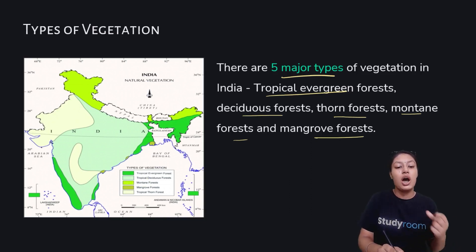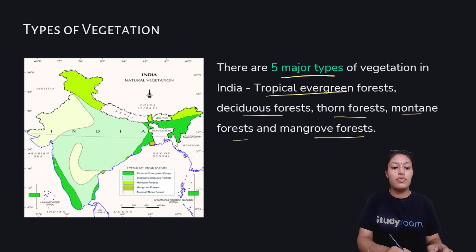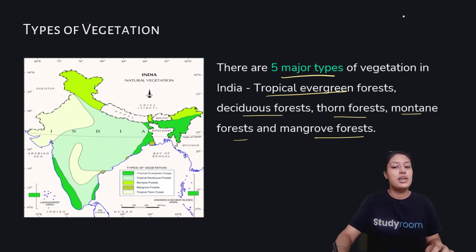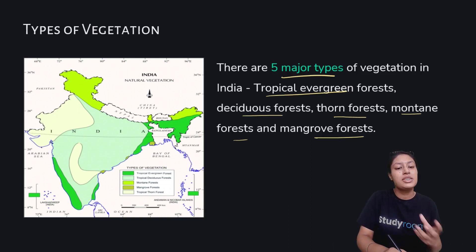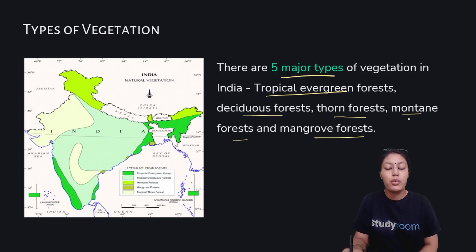Looking at the map, let's understand what type of forest and where they are located. Tropical evergreen forests are found on the western coast and somewhere on the eastern sides of our country. Tropical deciduous forests cover mostly central India. Thorn forests are in the western sides — in the Gujarat area, west region — where there is not much greenery.